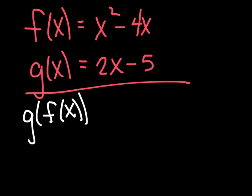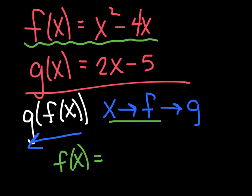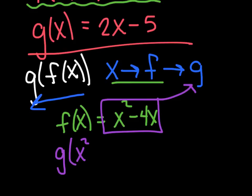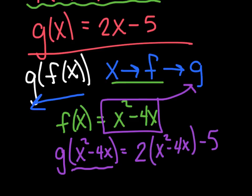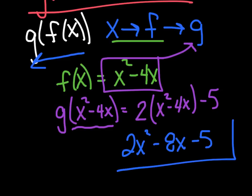Using the same functions, we'll now find g of f of x. Working backwards: x goes into f, take that output and put it into g. Finding f of x — you don't have to do anything, they tell you what f of x is: x² − 4x. Now substituting that into g: g of (x² − 4x) means I put this whole quantity in place of x: 2(x² − 4x) − 5 = 2x² − 8x − 5. And there you have it.